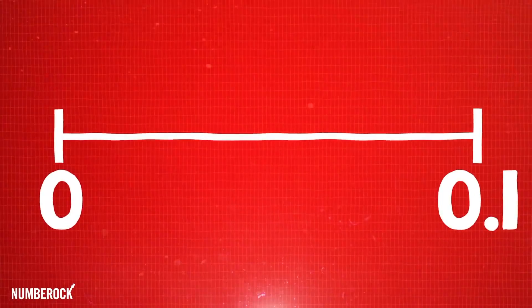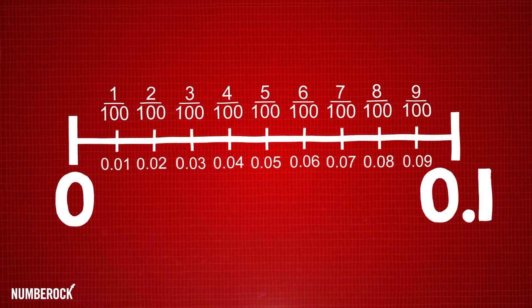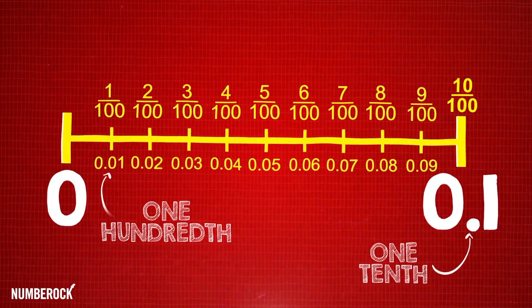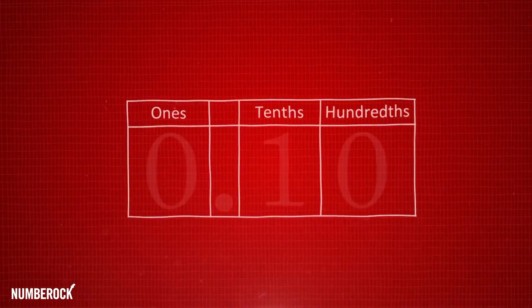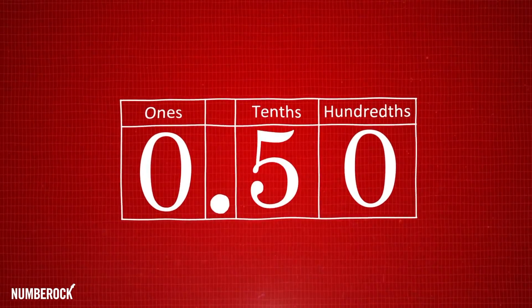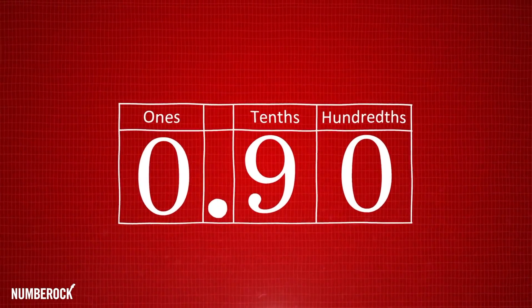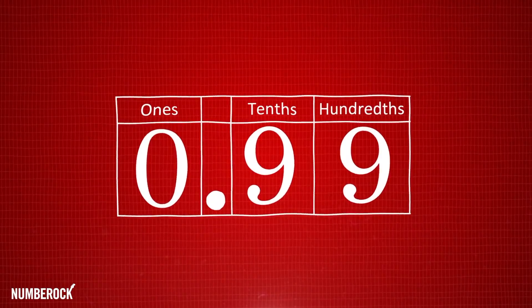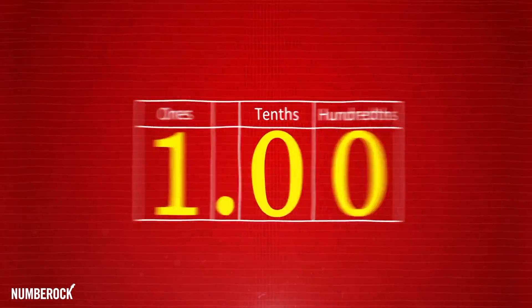Let's see what happens as the place value decreases and one tenth is divided into ten equal pieces. We get a hundredth written as point zero one, and ten of these make a tenth, but we're not done. Every ten hundredths makes another tenth on the chart, then something special happens at the ninety-ninth equal part. Because there's ninety-nine hundredths, we're one hundredth away from one whole, or one hundred hundredths, you could say.